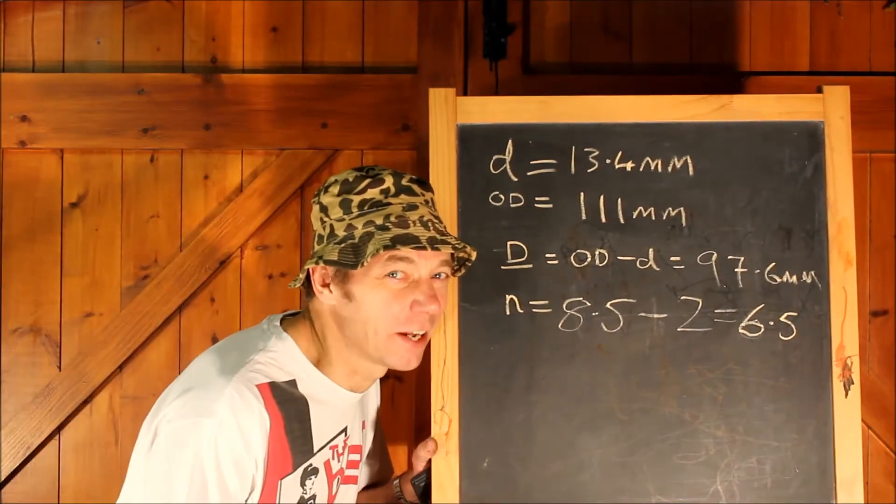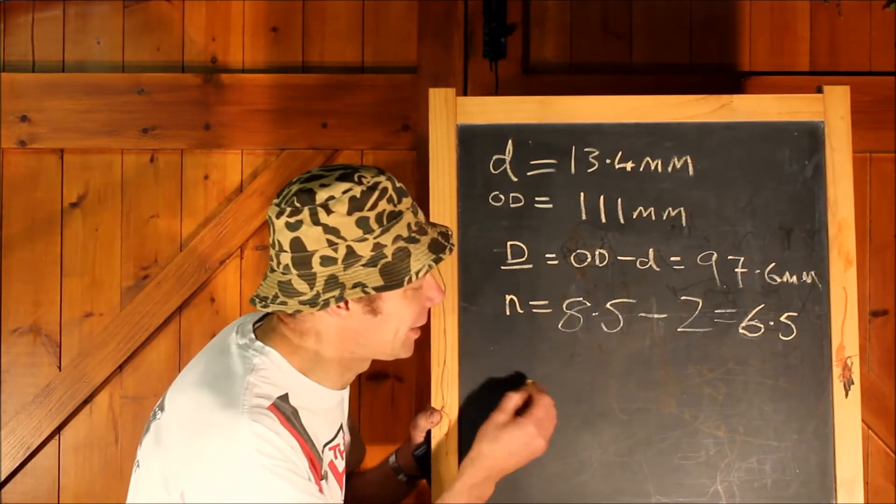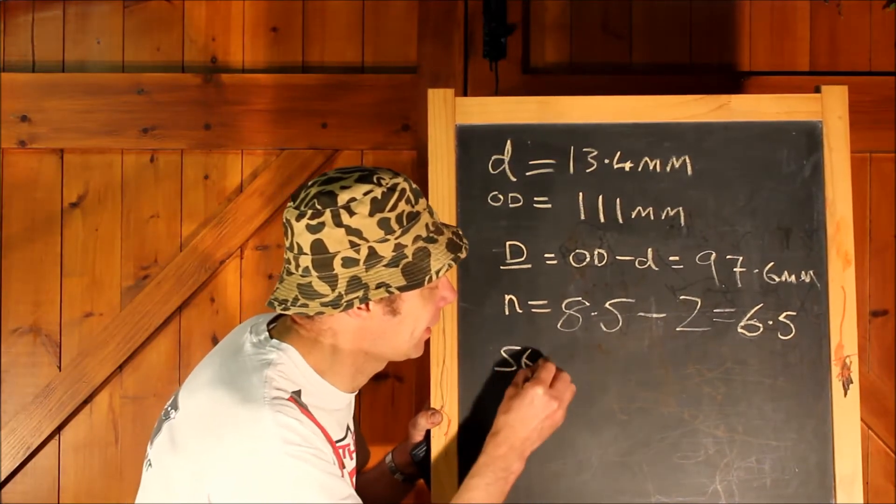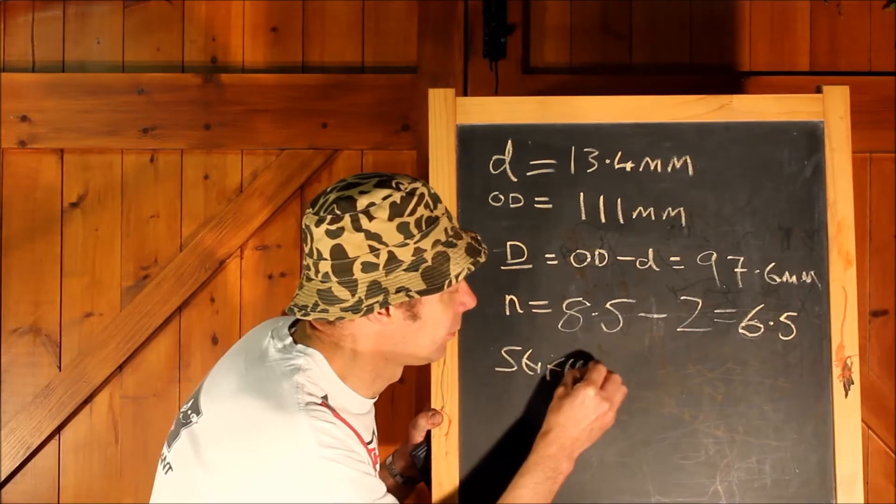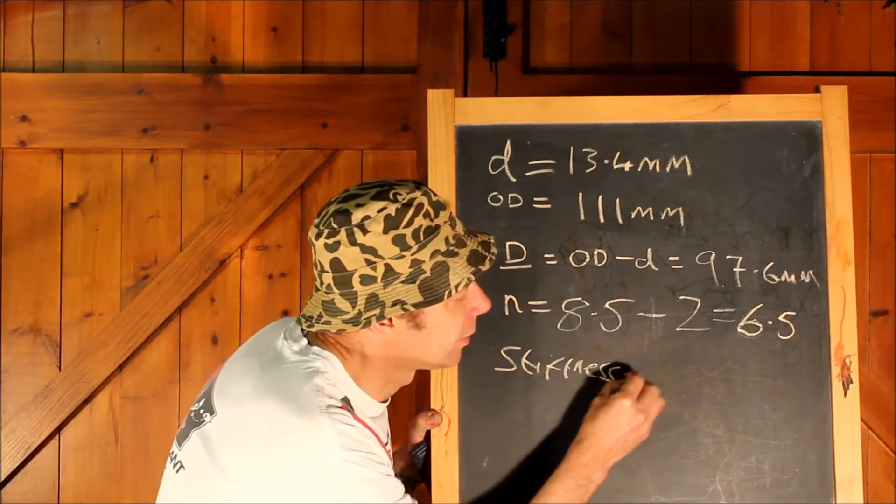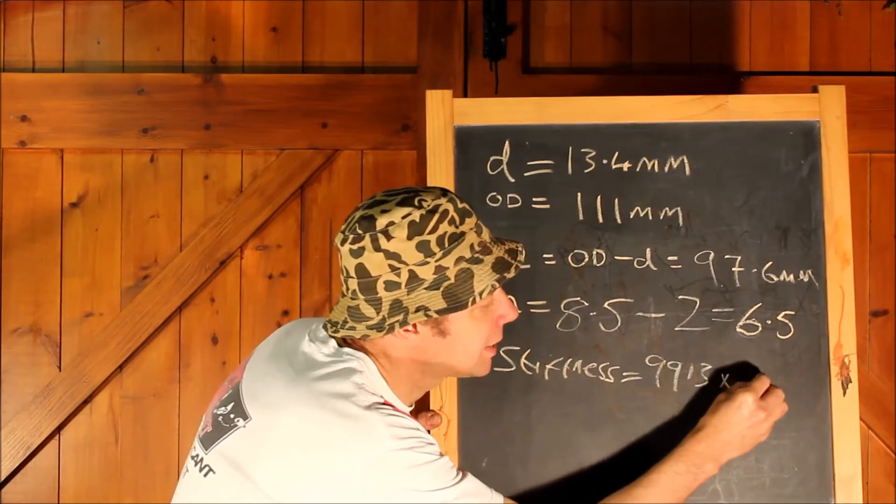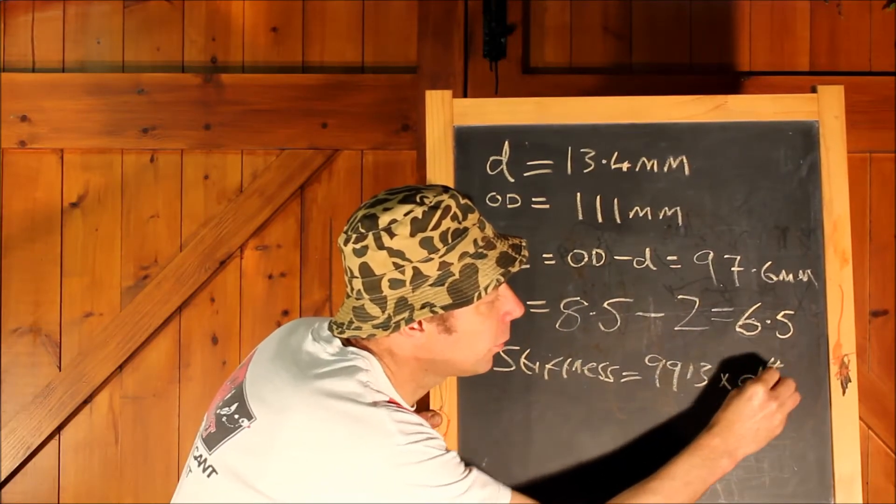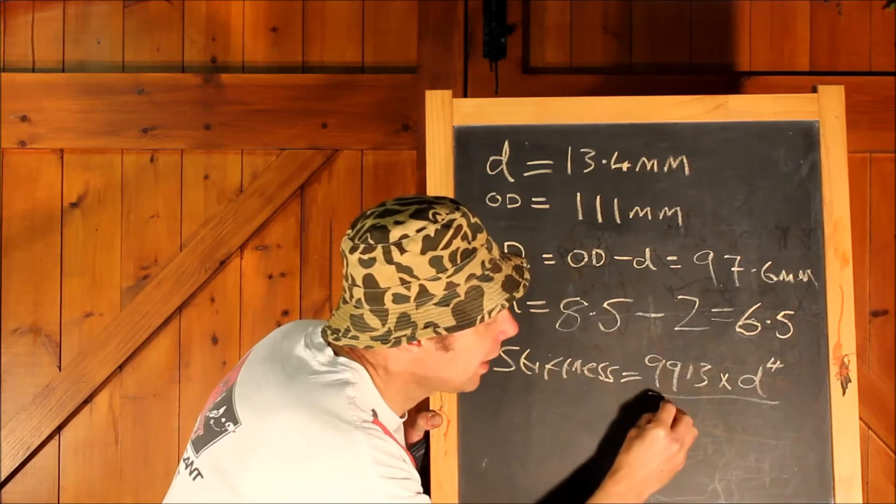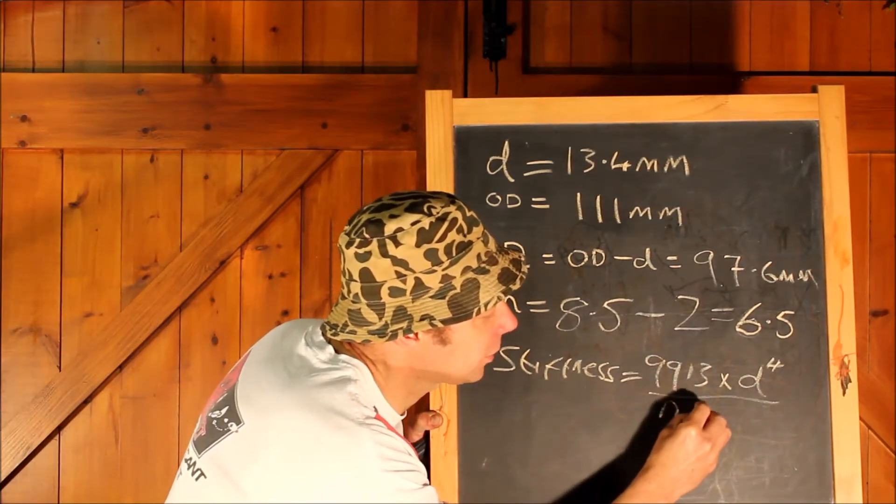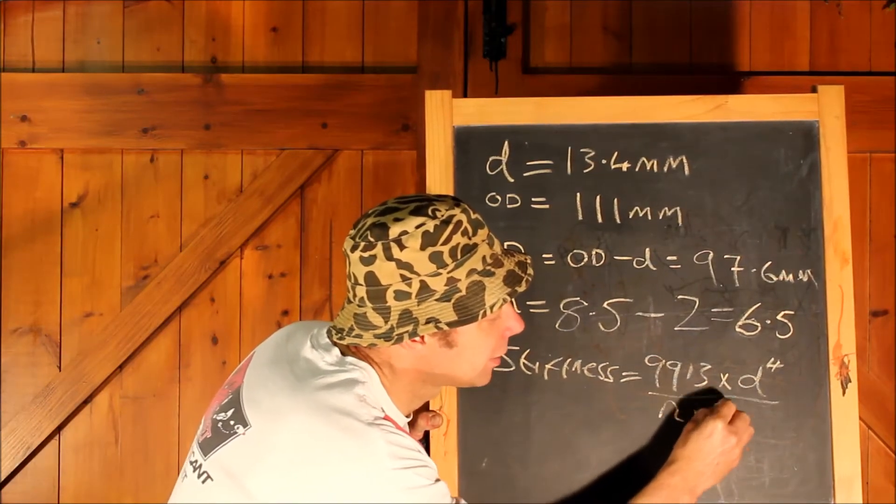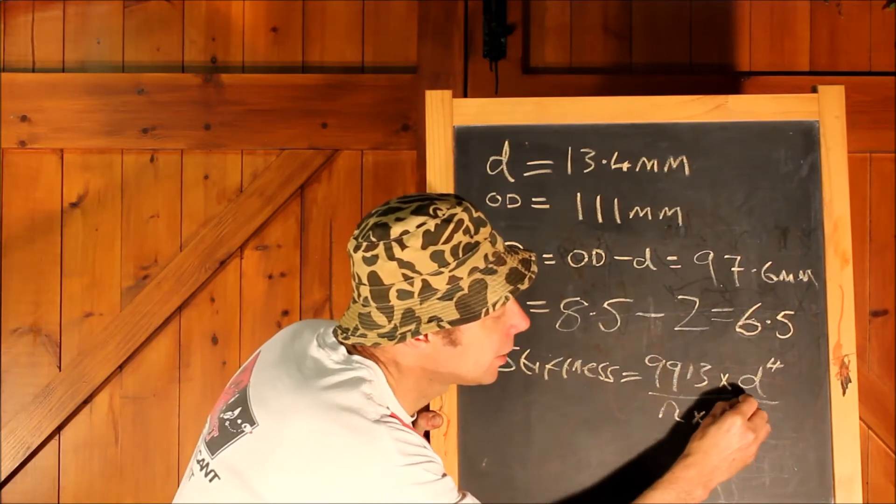Now if you've been thinking this is easy and you don't need the calculator, then this is what you need the calculator for, because the stiffness is 9913 times d, little d, to the power of 4, over n, the number of active coils, times the mean coil diameter, big D, cubed.